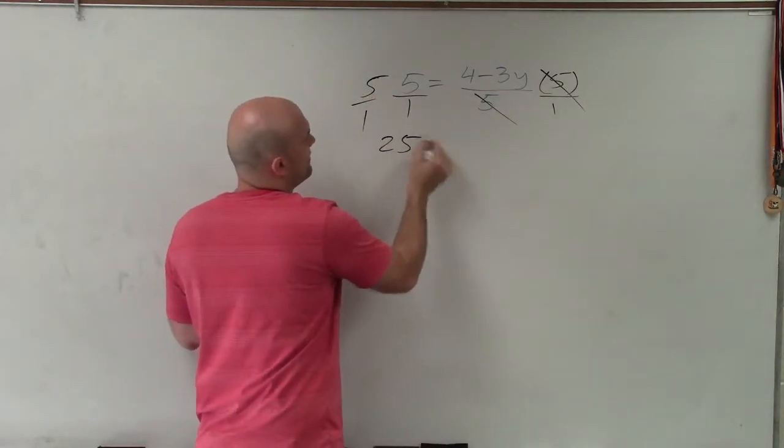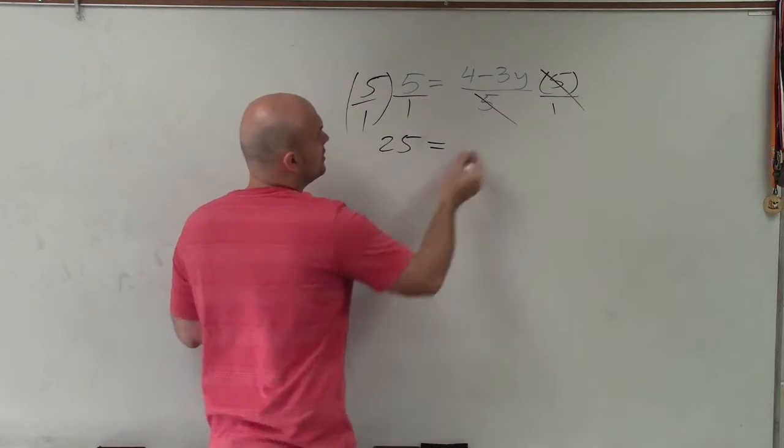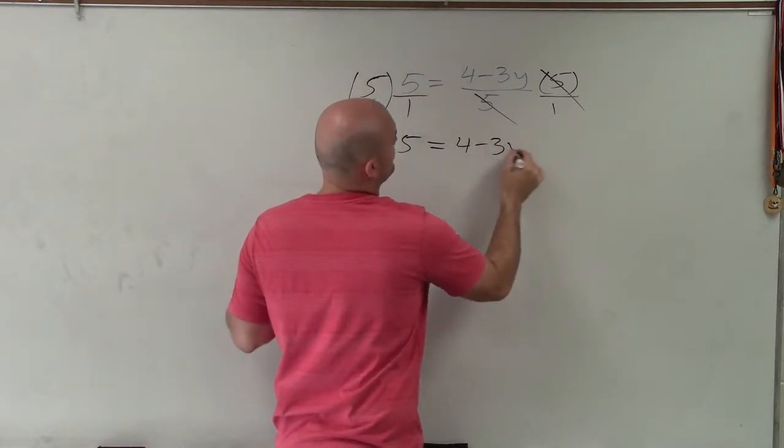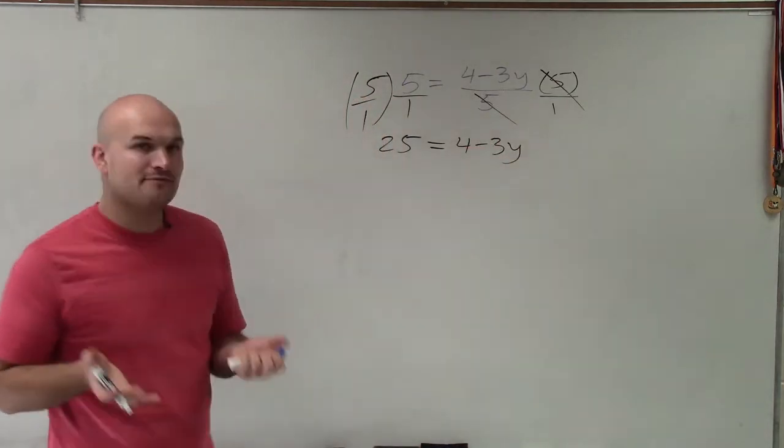So therefore, I have 25 equals, that's multiplication, 25 equals 4 minus 3y, which would have been the exact same thing if you would apply the cross product.